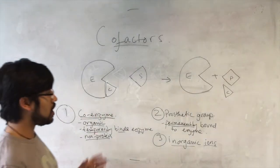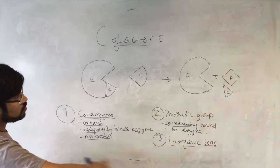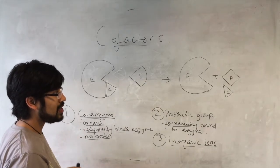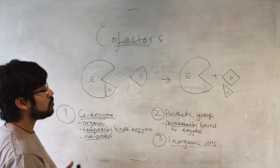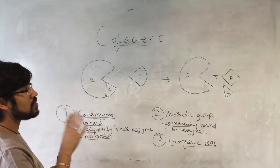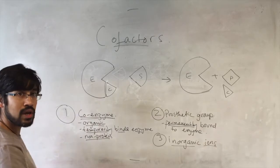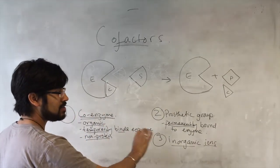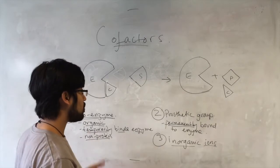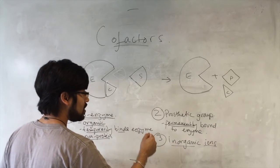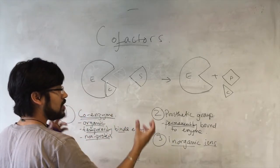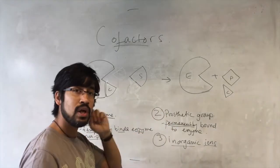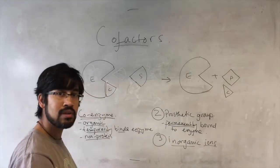If a question about cofactors and enzymes comes up, it might not be obvious whether you're dealing with an inhibitor or a cofactor. Look for clues. First: is this thing increasing the rate of the reaction? If so, it's likely to be a cofactor. Then look at its properties — is it a simple inorganic ion like zinc, calcium, sodium, or potassium? Or is it something more complex? If complex, it's likely a coenzyme or prosthetic group. Is there a hint it's not permanently bound? Then it's a coenzyme.